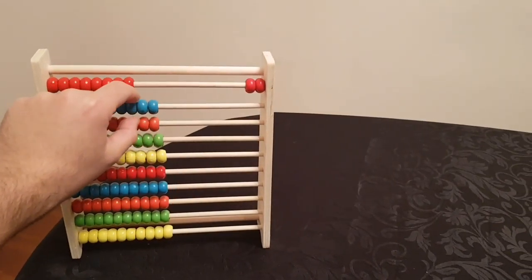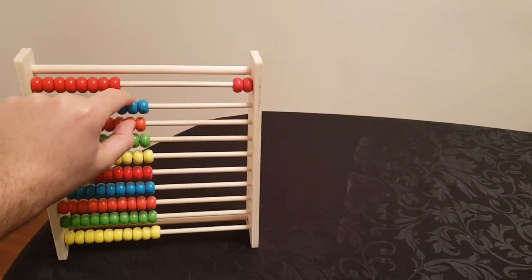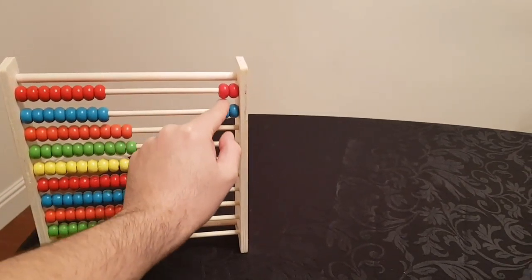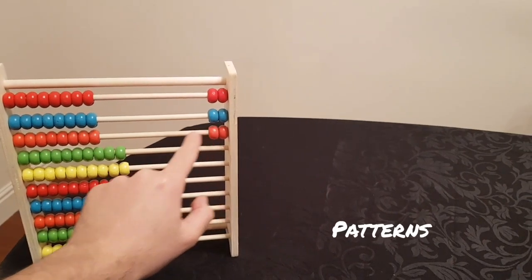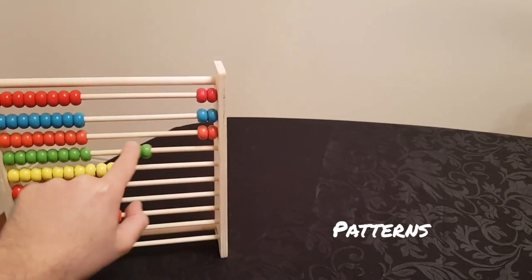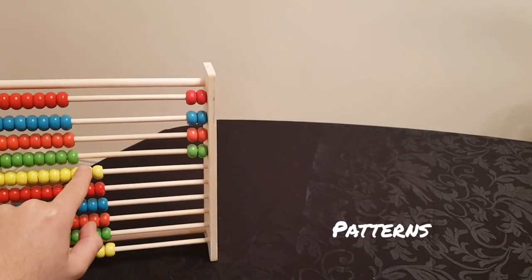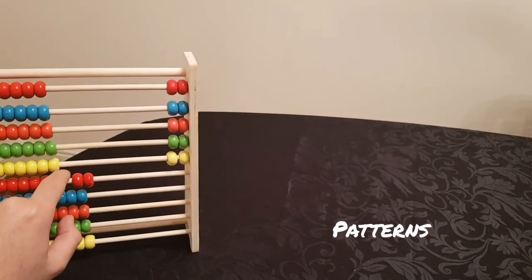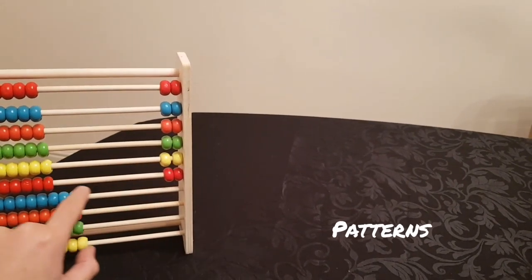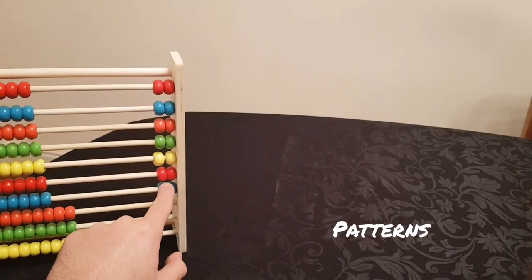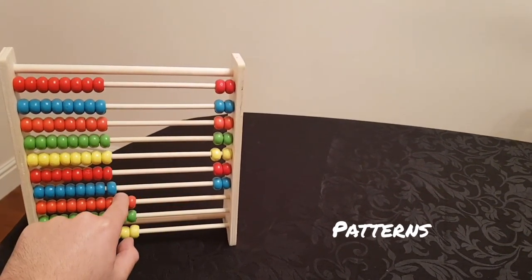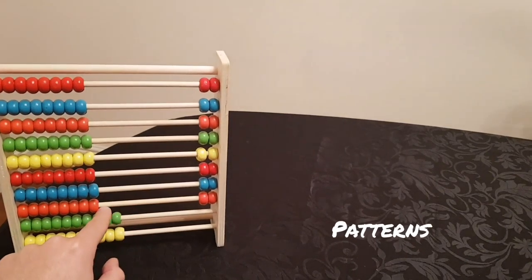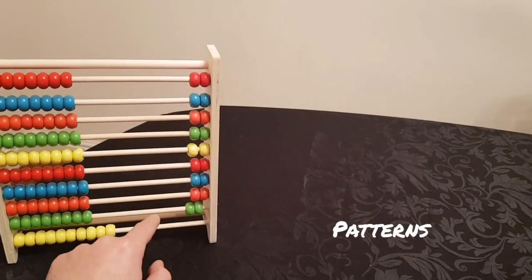One more thing you can start doing with the Abacus is to start doing patterns with your child. Again, make sure that your child understands the numbers behind those patterns, get them to touch the actual Abacus. It is challenging for the child to understand what patterns mean. Actually, challenging your child is a healthy thing. Challenge paves the way for developing.